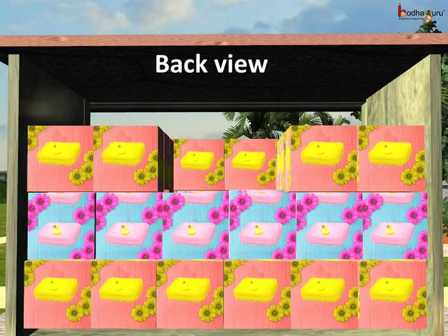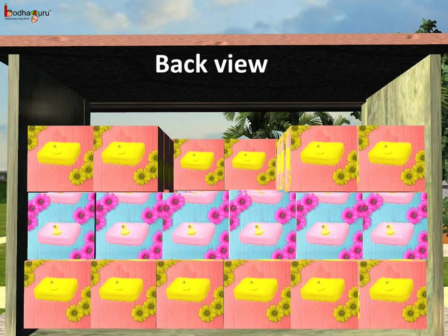Now let us look from another viewpoint — that is, the back side of the godown, which we will call the back view. Looking from this angle, we can say maybe 4 or 6 boxes are missing from the top layer. The missing blue one cannot be observed from this view.